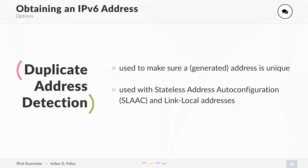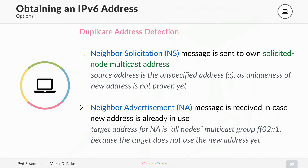How does Duplicate Address Detection work? First, a neighbor solicitation is sent to the own solicited-node multicast address. The source address, because you don't have any address yet, is the unspecified address (::). You don't know that your address is unique yet, so you will not use it. Secondly, you wait for a neighbor advertisement in case somebody is already using this address. If you receive a neighbor advertisement in response to your neighbor solicitation, you know your address is not unique and you have to generate a new one. The target for this NA message is the all-nodes multicast group, because the source host does not use the new address yet and it cannot be sent to that address.